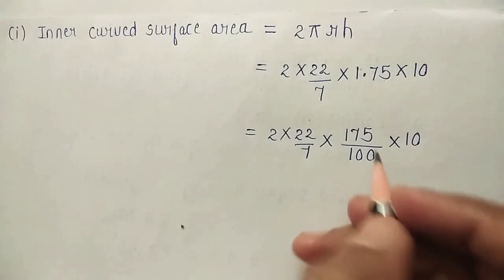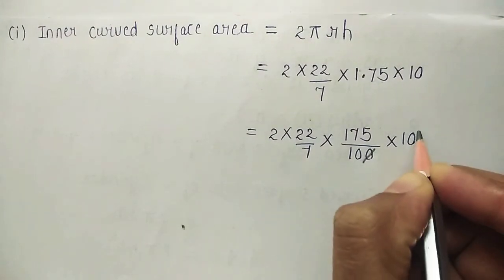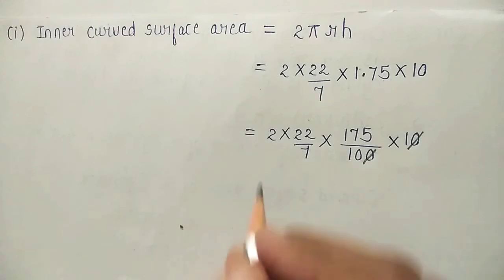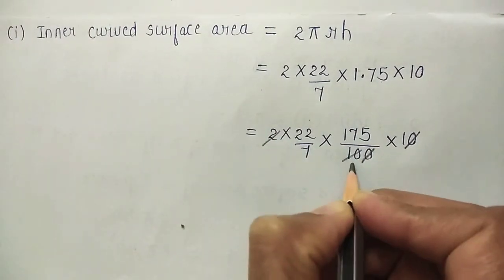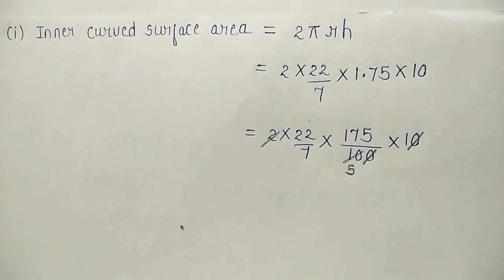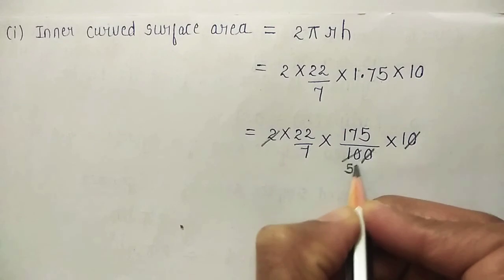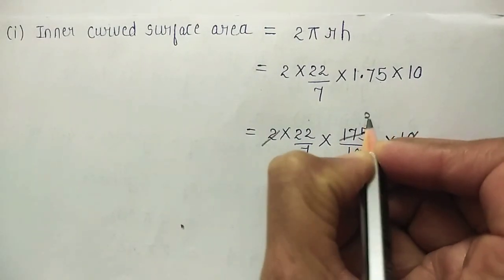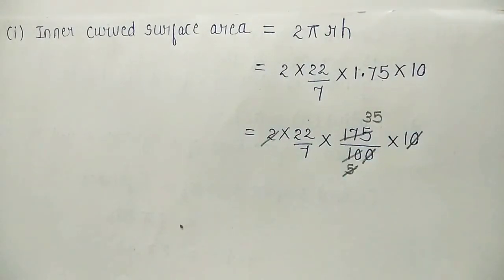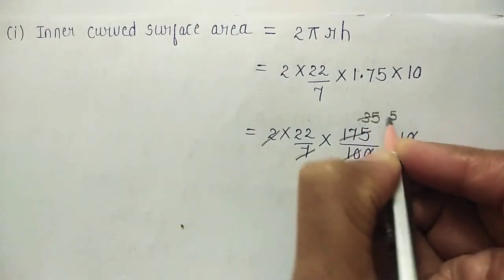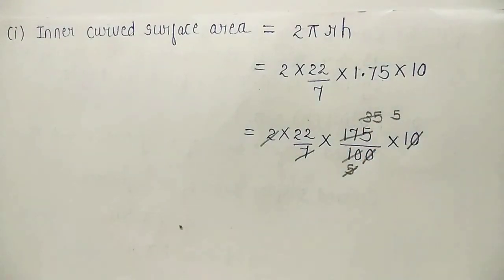So, we have this 1 zero and this zero cancelled. 2 times 5 is 10 and 175 divided by 5 is 35. 7 times 5 is 35. So, what are we left with?